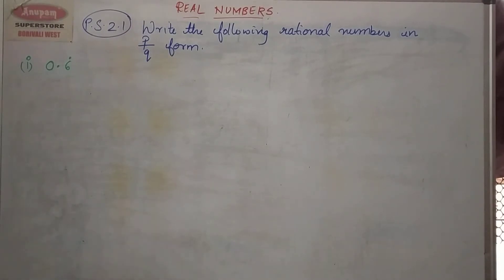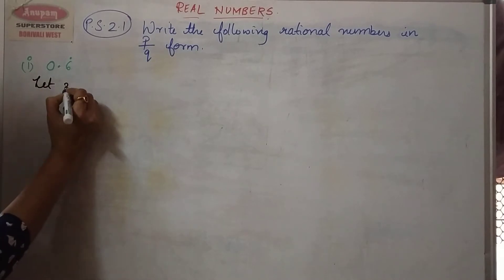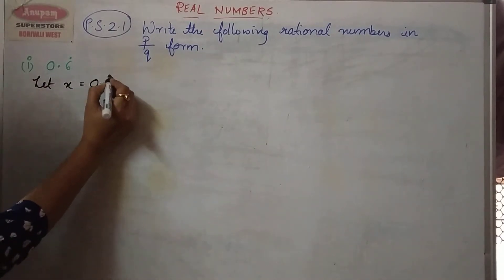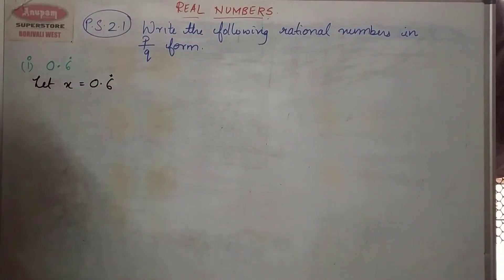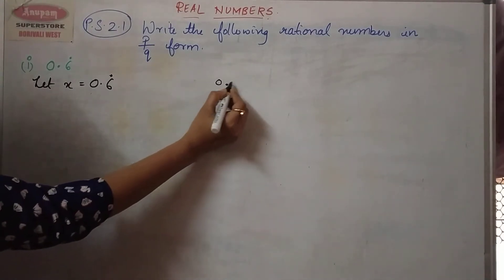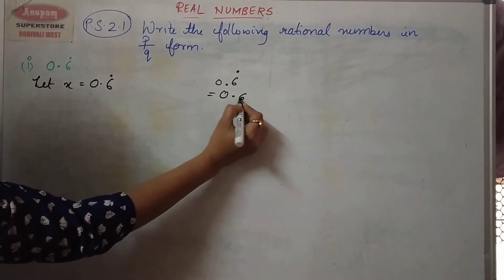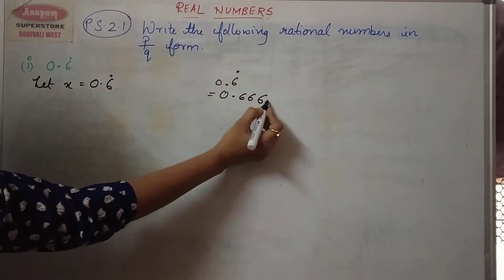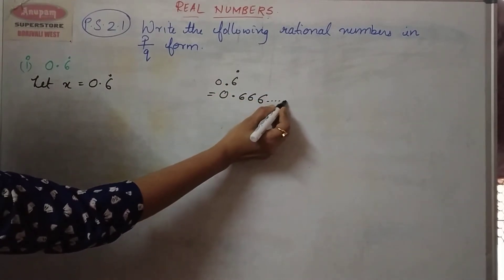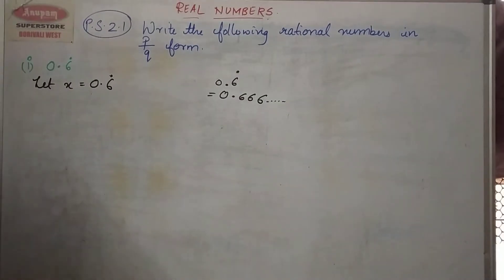The first step is: let x is equal to 0.6 dot. Children, we need to understand what this means. 0.6 dot means 0.666... — this dot indicates that 6 is repeated and it doesn't stop; it goes on and on.